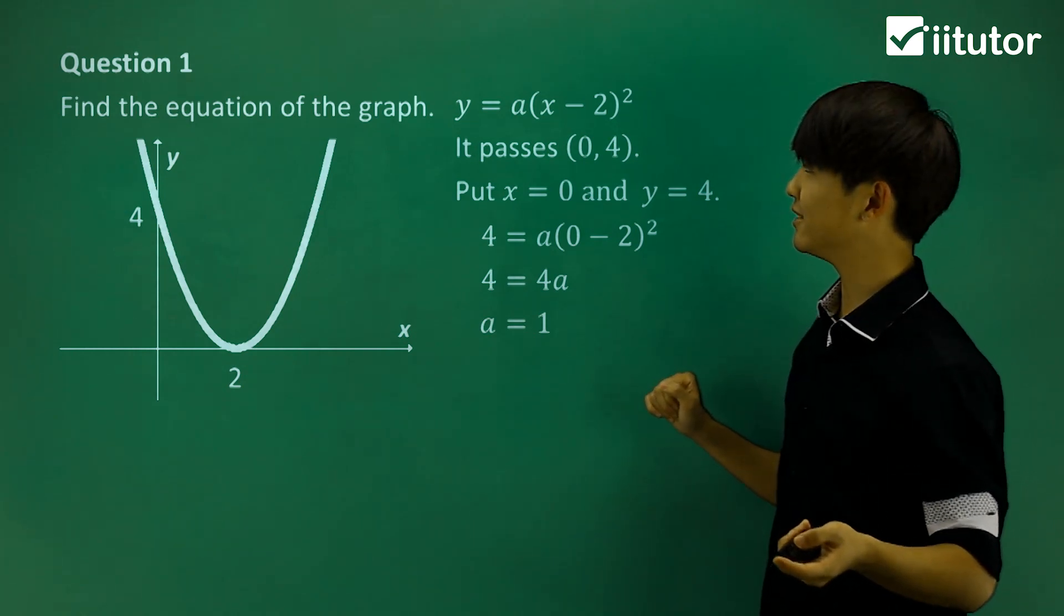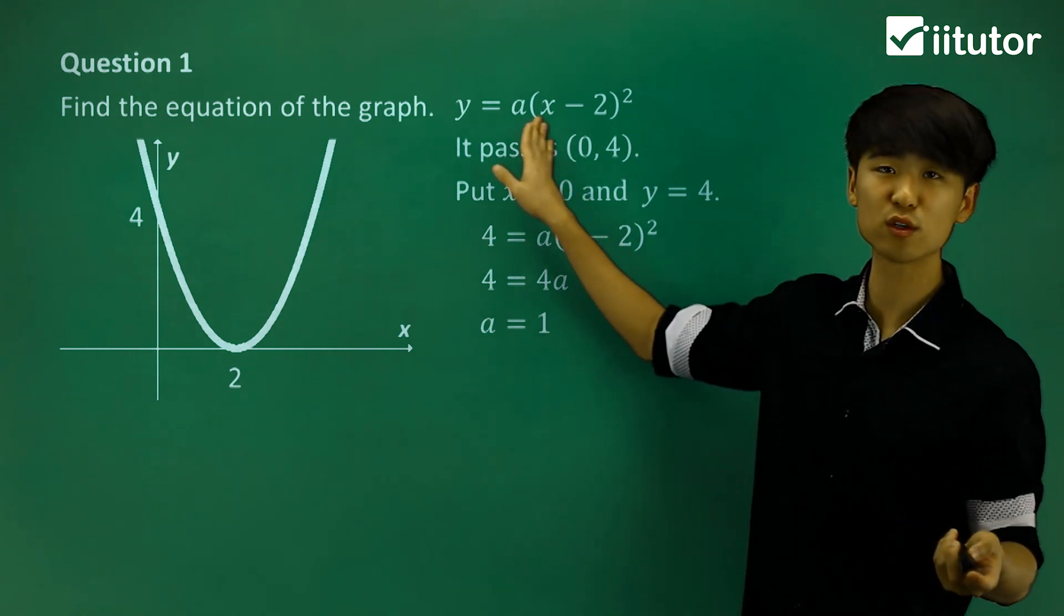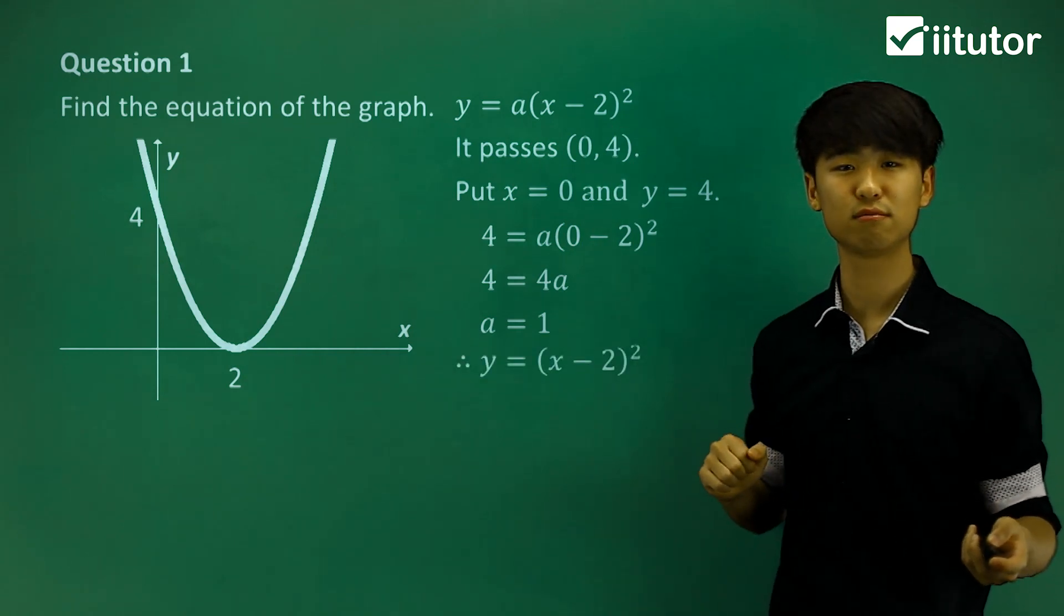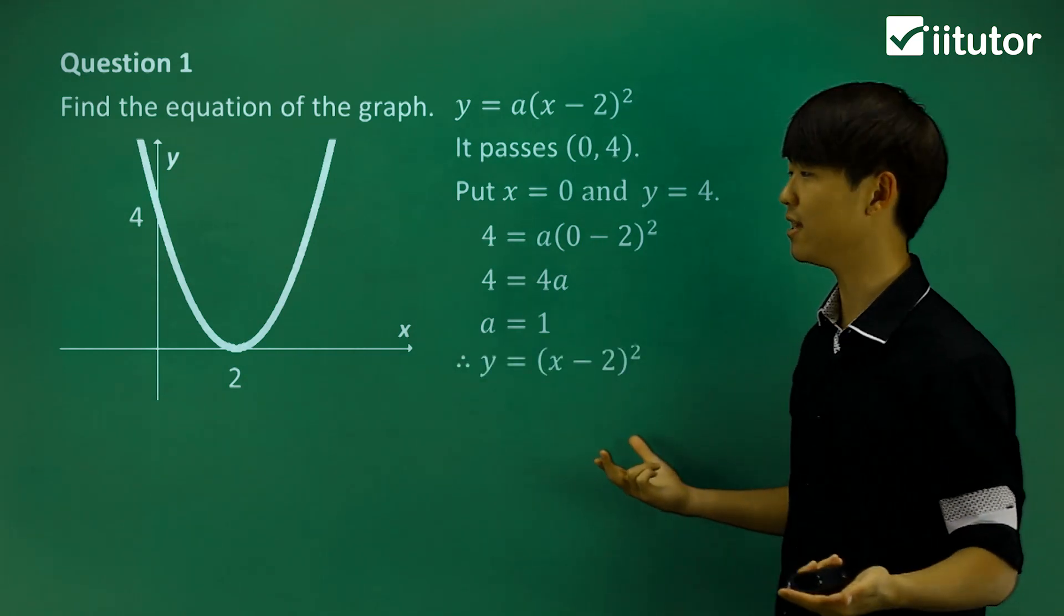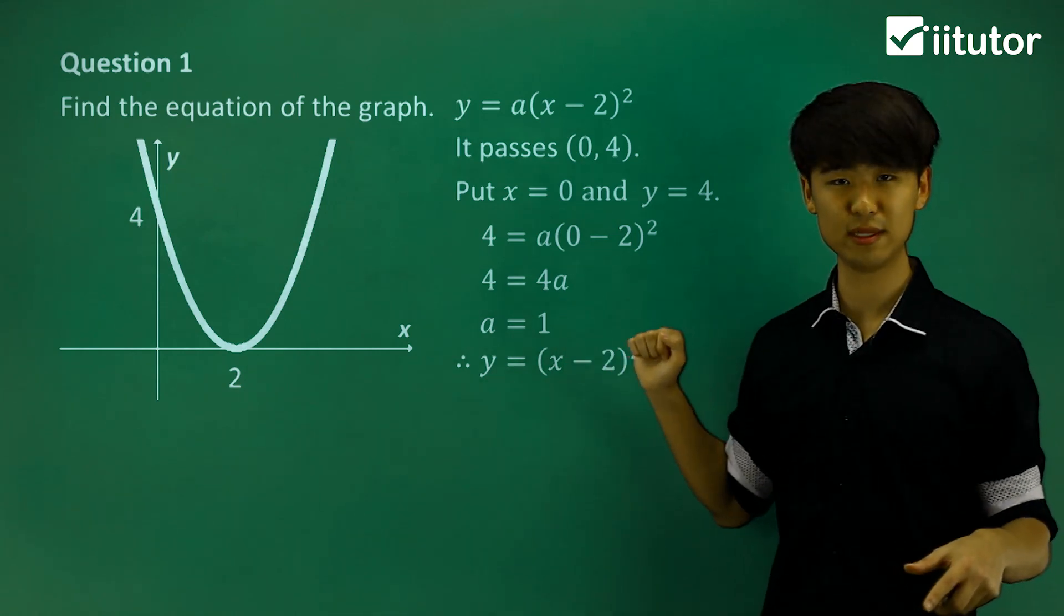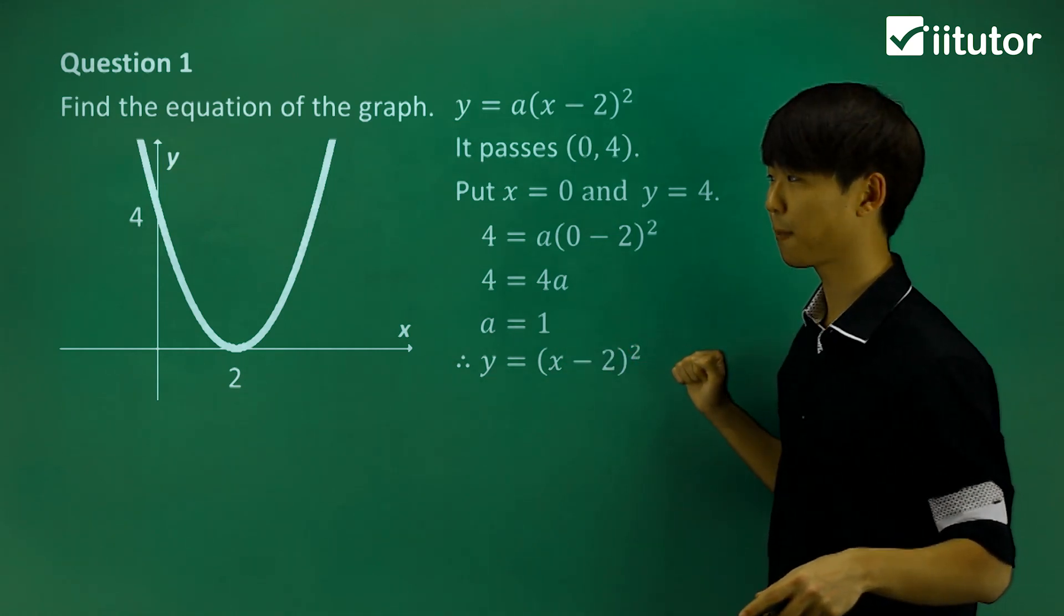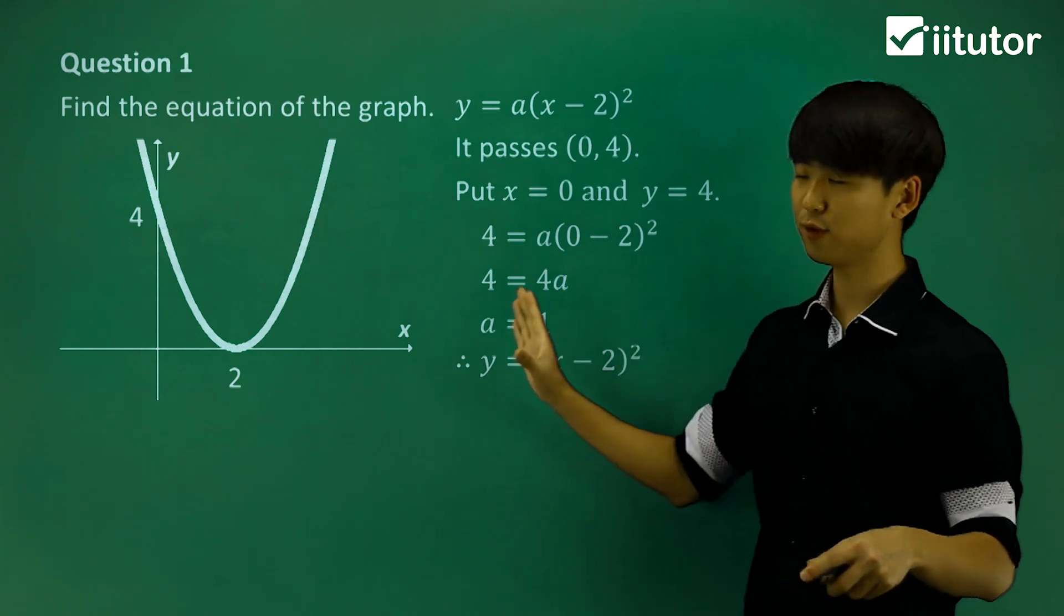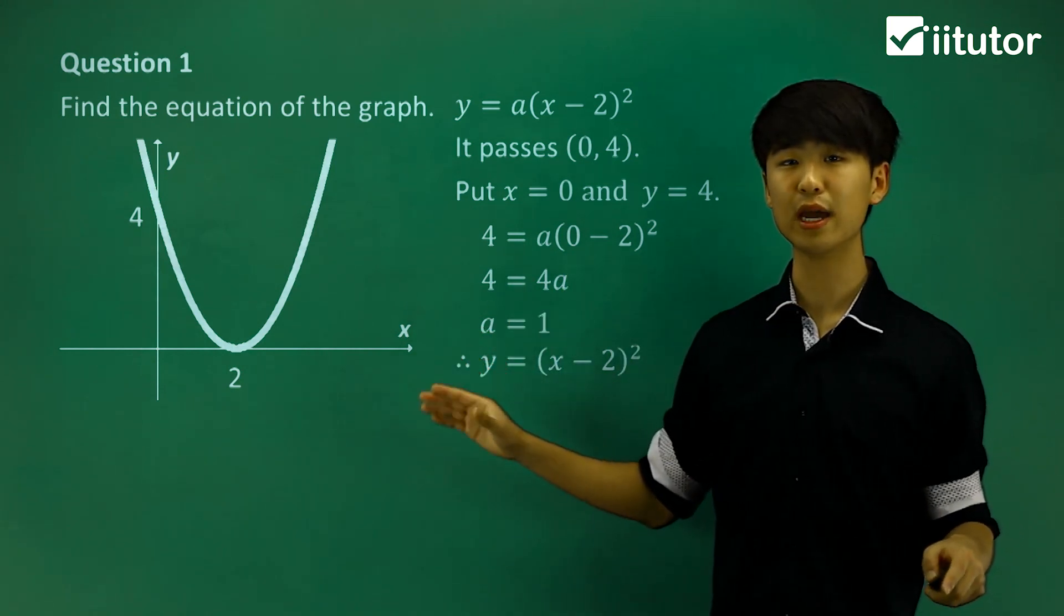So we found a is equal to 1. Then let's rewrite this equation and write 1 instead of a. Then y is equal to (x minus 2) all squared is going to be the equation of this parabola. So hopefully we understood how to do this one, but we'll get more practice.